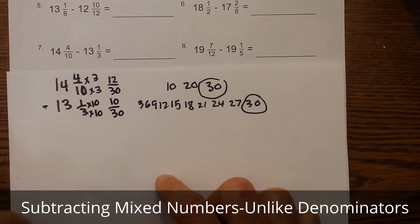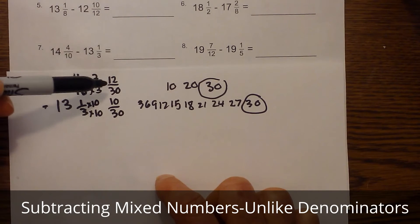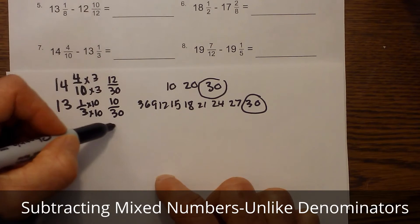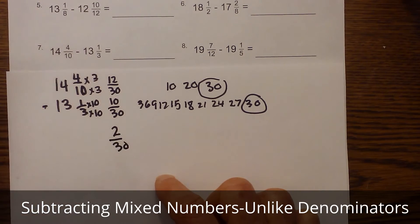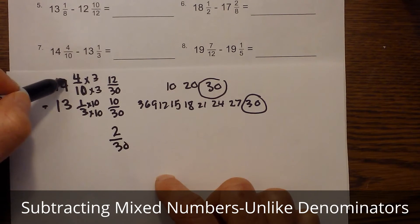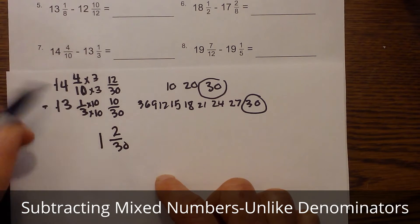Okay, now notice it is a little bit different than the previous question, because twelve is indeed larger than ten, so I can just subtract. So this becomes two over thirty, and then the fourteen, I don't have to borrow one from the fourteen. So then I just have fourteen minus thirteen, and that becomes one and two thirtieths.